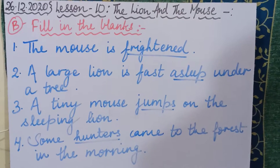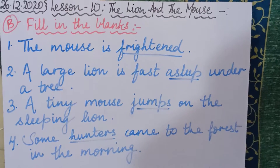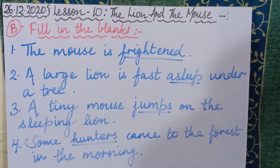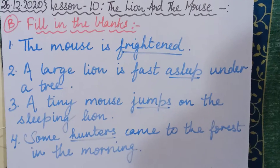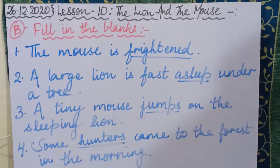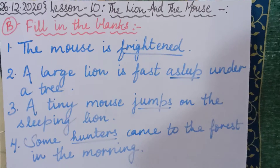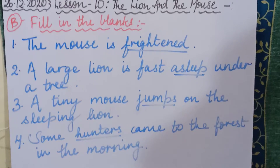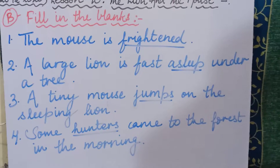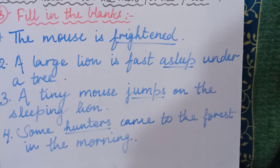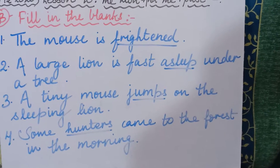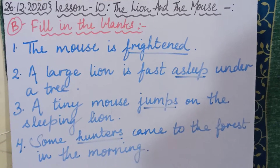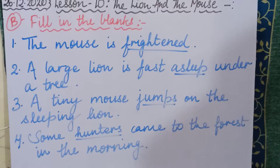Now back to our studies, children. As you all know, we started last week with our new chapter in English Literature — that was Lesson Number 10, The Lion and the Mouse. I hope you all have understood the story very easily, as it is a very easy story. I had also given you one exercise to complete — the word meanings part — and I hope you all have done that in your English Literature notebooks.